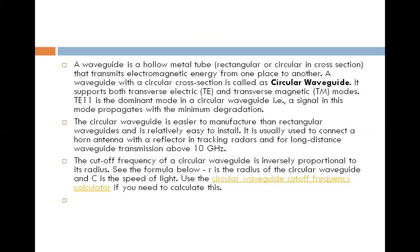A waveguide with circular cross section is called the circular waveguide. It supports both transverse electric and transverse magnetic modes. TE11 is the dominant mode in the circular waveguide. Same way, TE10 is the dominant mode in the rectangular waveguide.